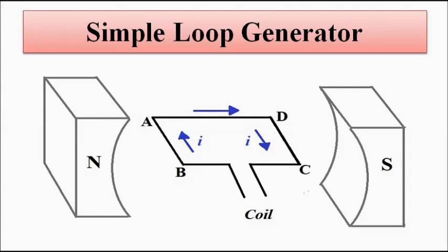We have already discussed the simple loop generator, where we have a rectangular loop coil placed in a magnetic field with north and south poles, and with the current directions as indicated. Please watch that video for reference. Here it is only a one turn coil — a single turn coil — because it is a simple loop generator.